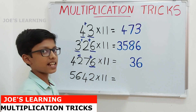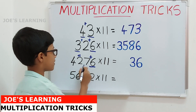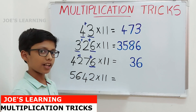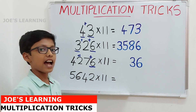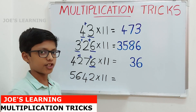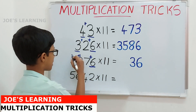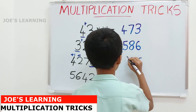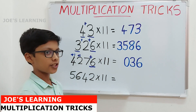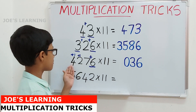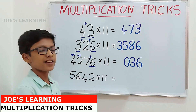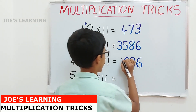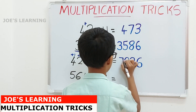Now to find the next digit, we add 7 and 2, which equals 9, and 9 plus 1 (carried) equals 10. Since we can only write one digit, we carry over that 1 to the next digit and write down 0. Then we add 2 and 4, which equals 6, plus 1 carried equals 7, so we write down 7 as the next digit of our product.